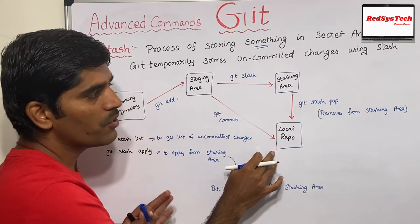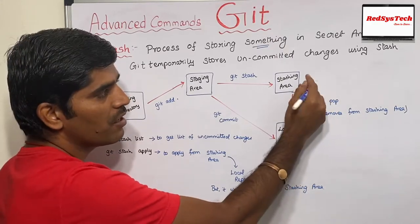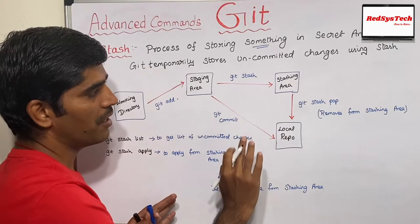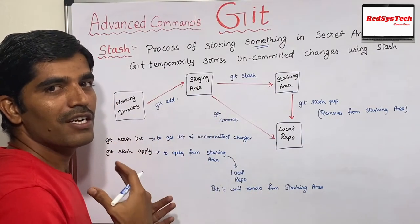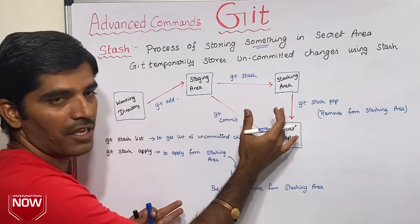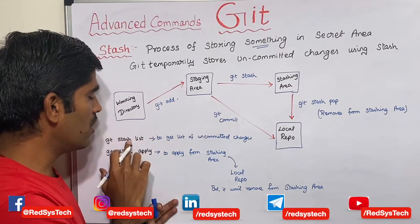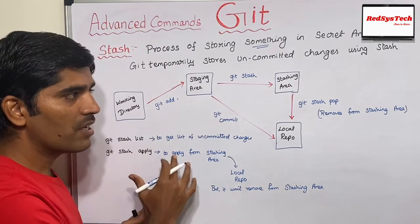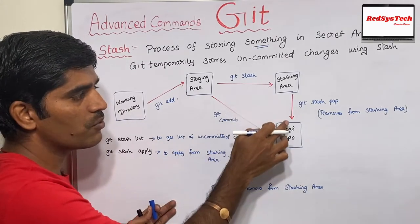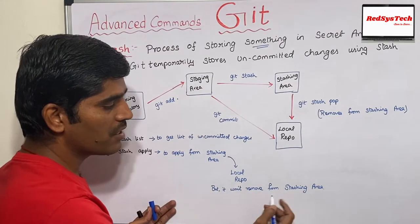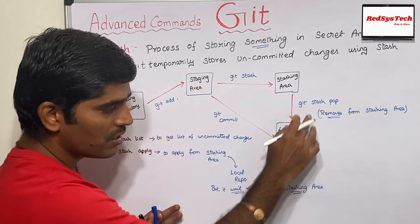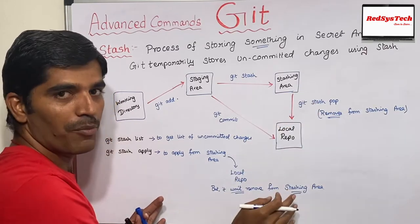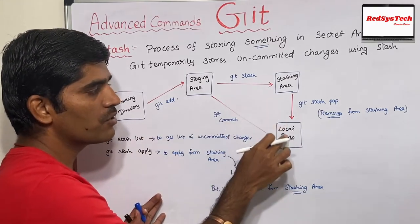Whenever you want to get changes from the stashing area to the local repository, you can say 'git stash pop'. Pop means it will take the items from the stashing area to the local repo and then remove them from the stashing area. To list all uncommitted changes in the stashing area, use 'git stash list'. There is also 'git stash apply', which applies the stashed changes to the local repository but does not remove them from the stashing area — that is the difference between git stash apply and git stash pop.